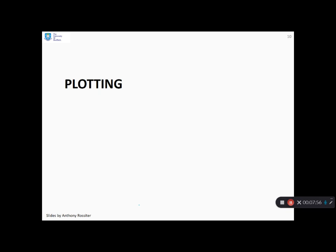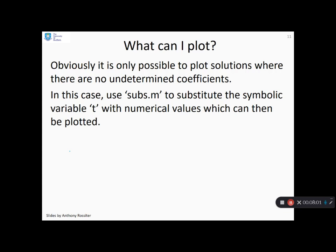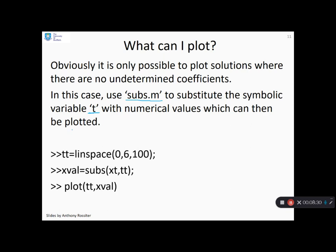So plotting. Obviously, we might want to plot our solutions. Now, you can only plot if there are no undetermined coefficients. OK, so you have to have precise numbers. Otherwise, you're not going to have a meaningful plot. So all we need to do is say the only thing we don't know is the time. So we use subs to basically replace the symbolic variable T with some specific values of time. And then we can solve for x of t. So this is how you do it. You can see first, I define the times I'm interested in. I've used linspace here for convenience.